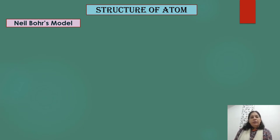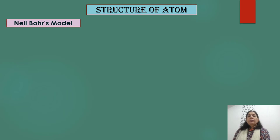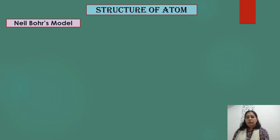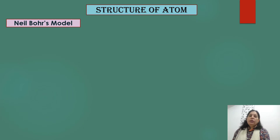In our previous lecture, we discussed the model given by J.J. Thomson as well as Rutherford's model of an atom. Rutherford performed the famous gold foil experiment; we studied the observations, conclusions, and postulates. That model was accepted by scientists for a long period of time, but there was a major drawback: it could not explain the stability of the atom.